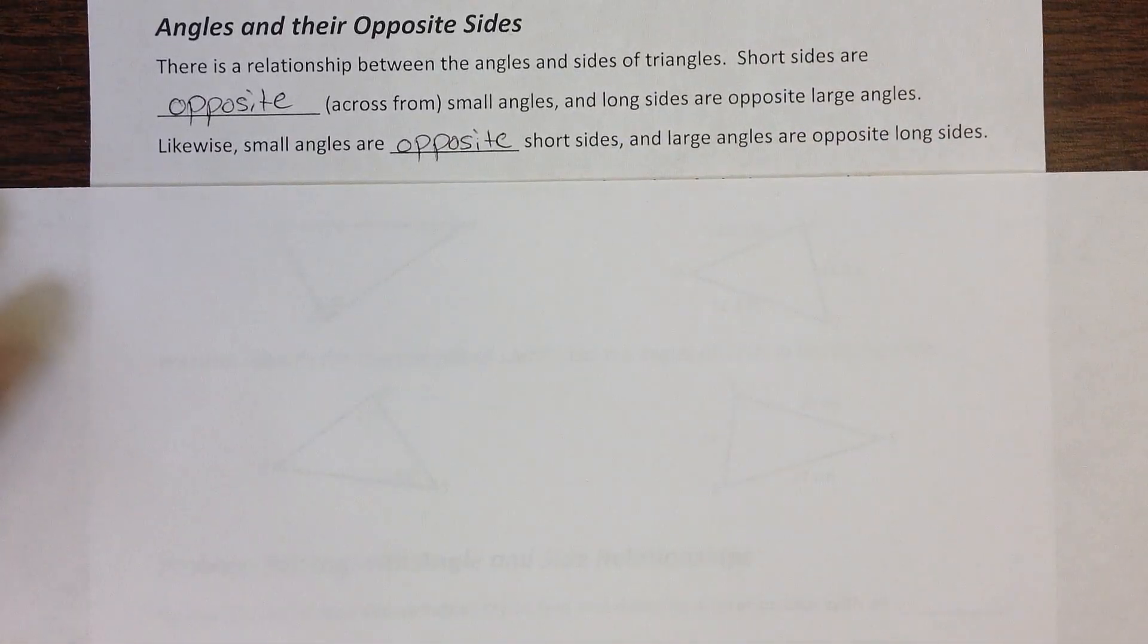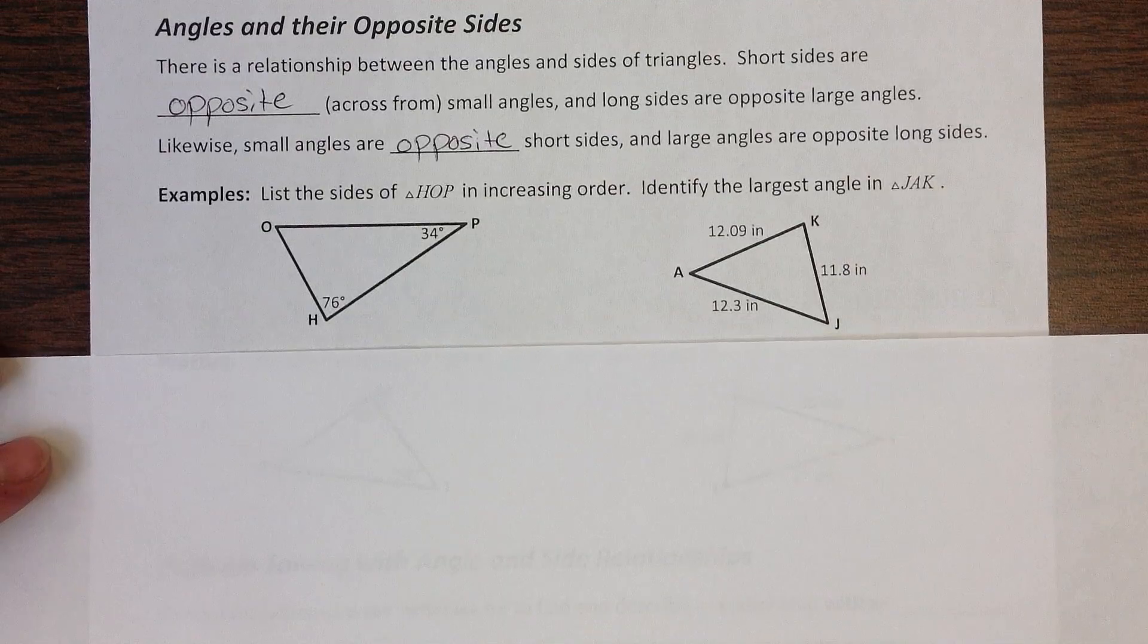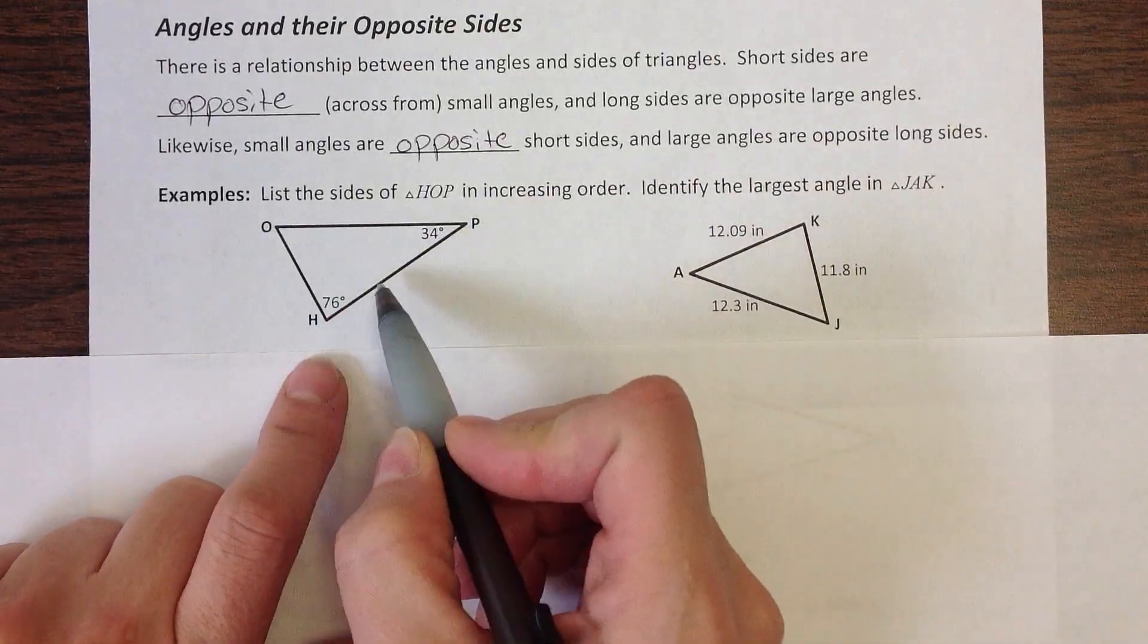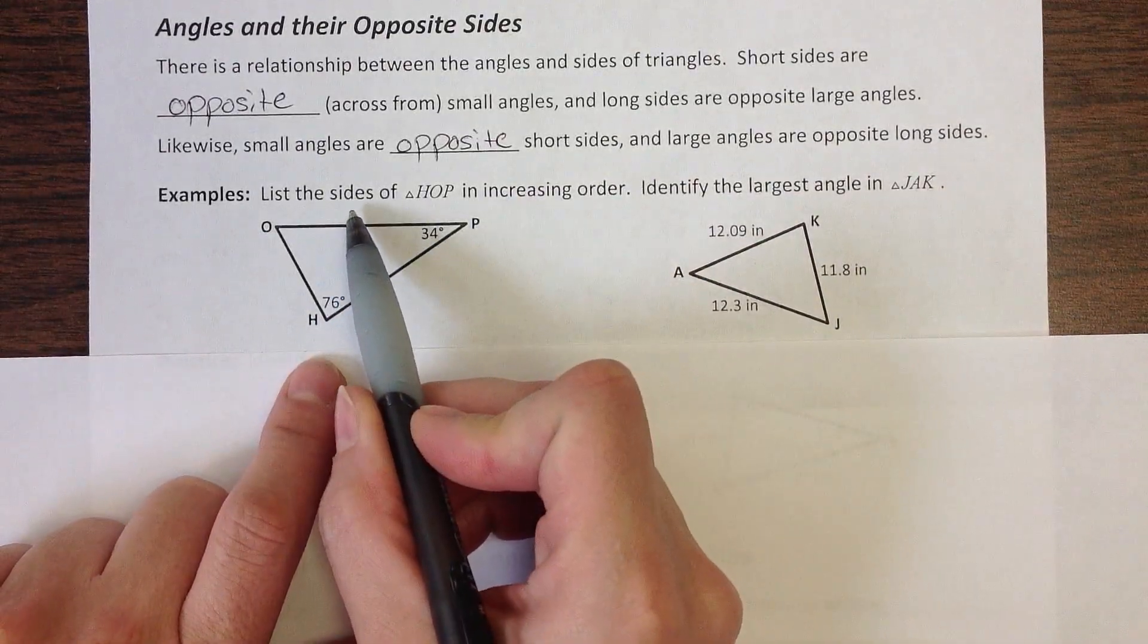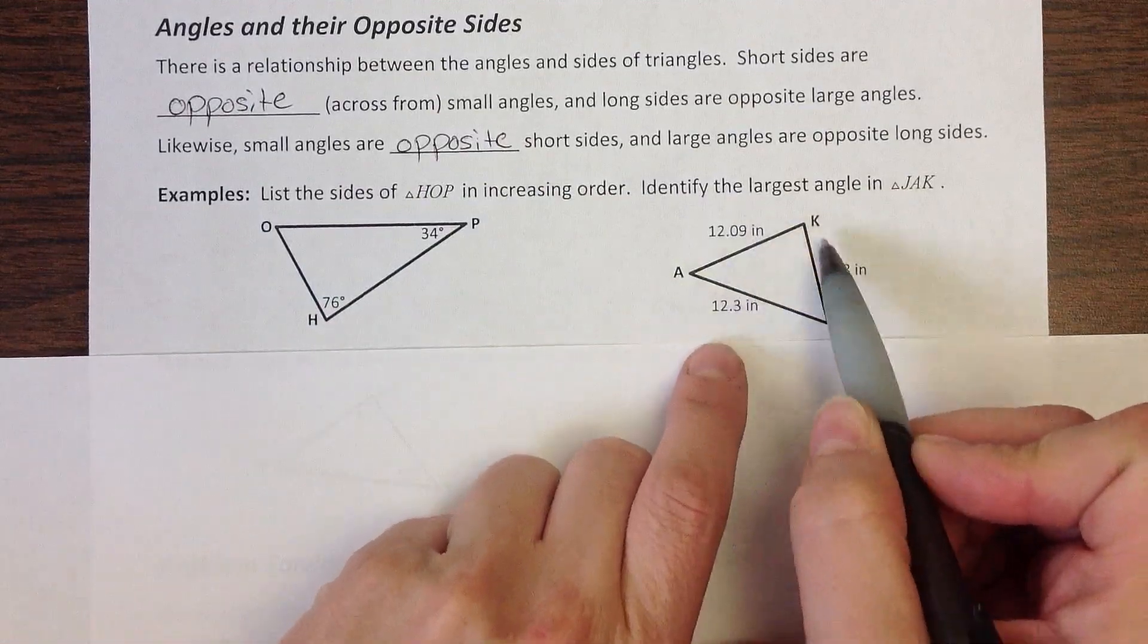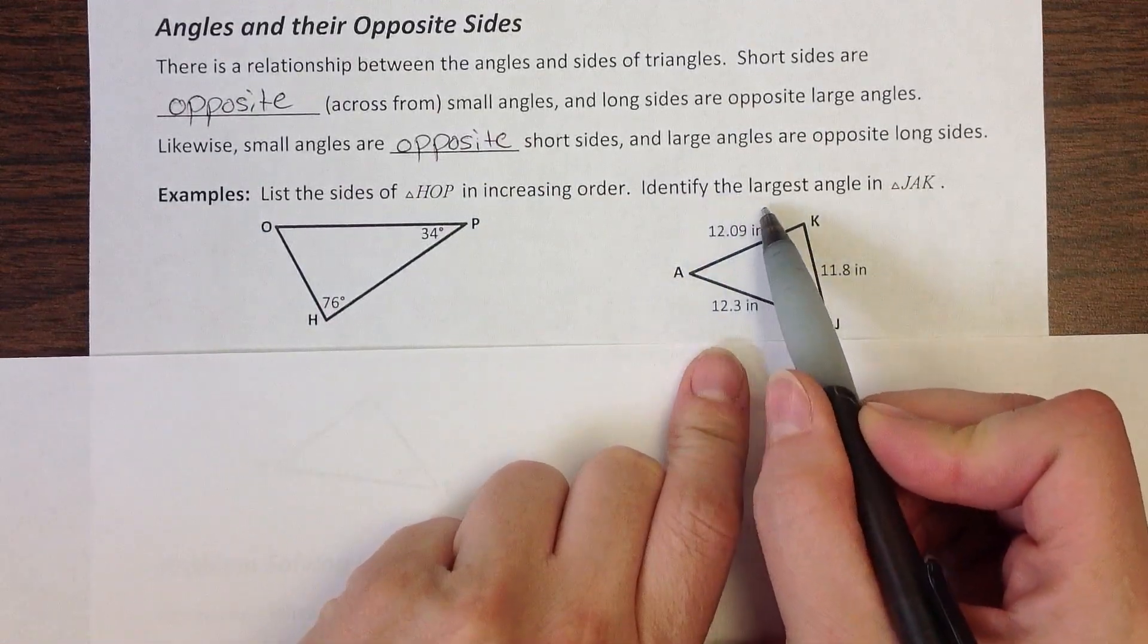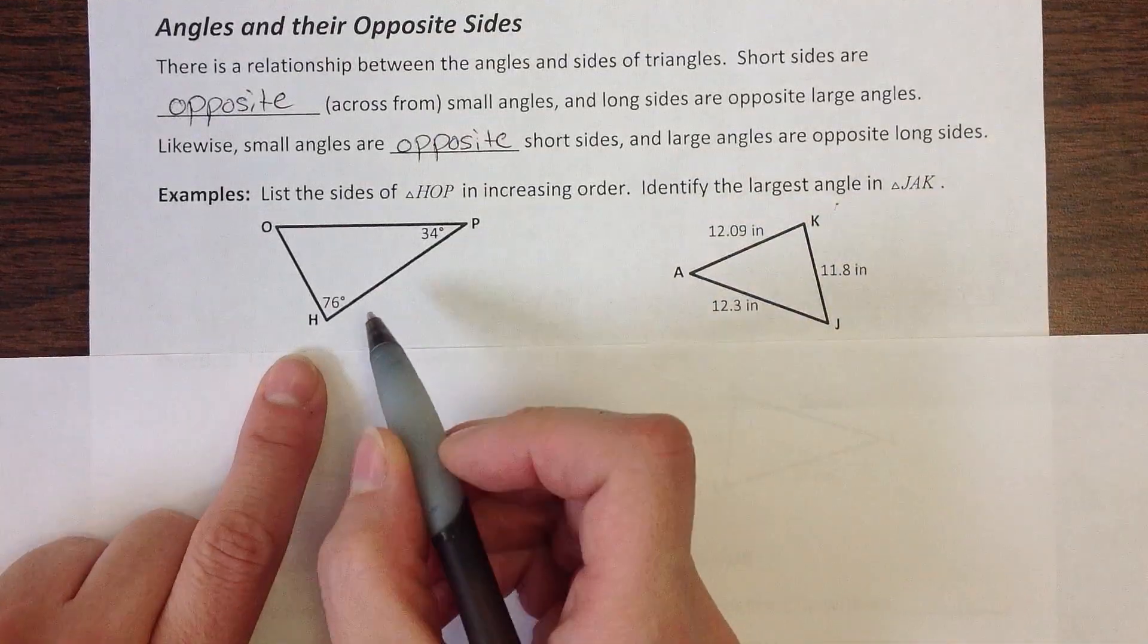So let's look at a couple examples. I can either give you information about the angles and ask you to give me information about the sides, or I could give you information about the sides and ask you to give me information about the angles. So let's start with this one.